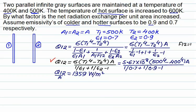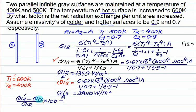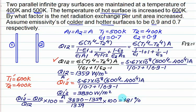In the second condition, the temperature of the hot surface becomes 600 K while the cold surface remains at 400 K. Everything in the equation remains the same except 500 is replaced by 600. To find the percentage increase: (Q_new - Q_old) / Q_old × 100. After substituting all values, the percentage increase is 181%.